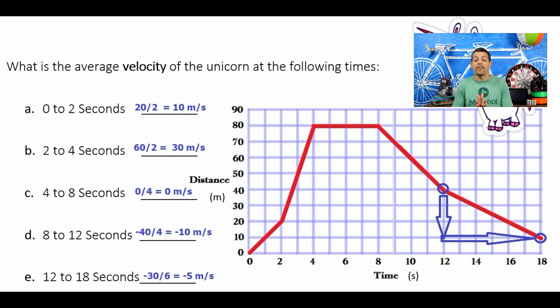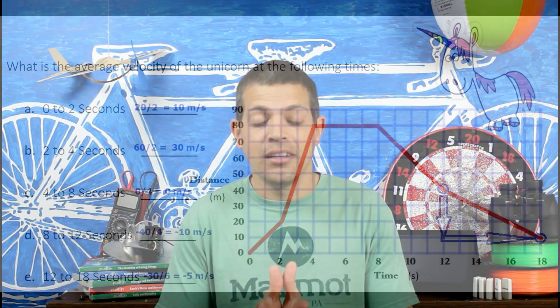Hopefully that helped you understand a graph for velocity. Now let's take a look at a graph for acceleration. We do the exact same thing — finding the slope, or rise over run. Instead of distance over time, for an acceleration graph we're looking at change in velocity over time, which is that equation for acceleration.